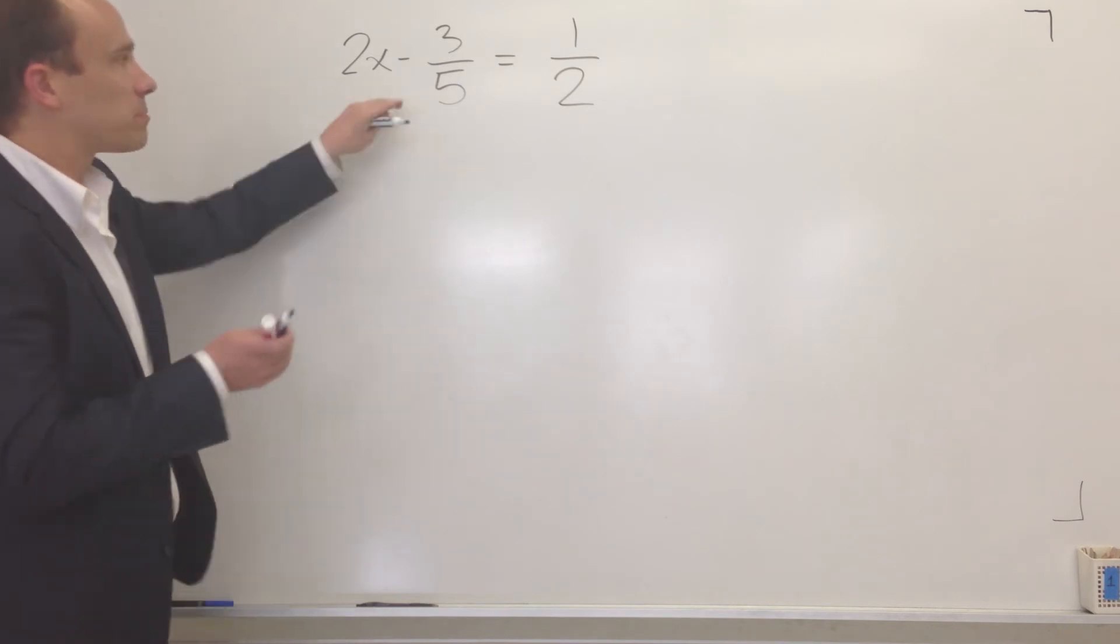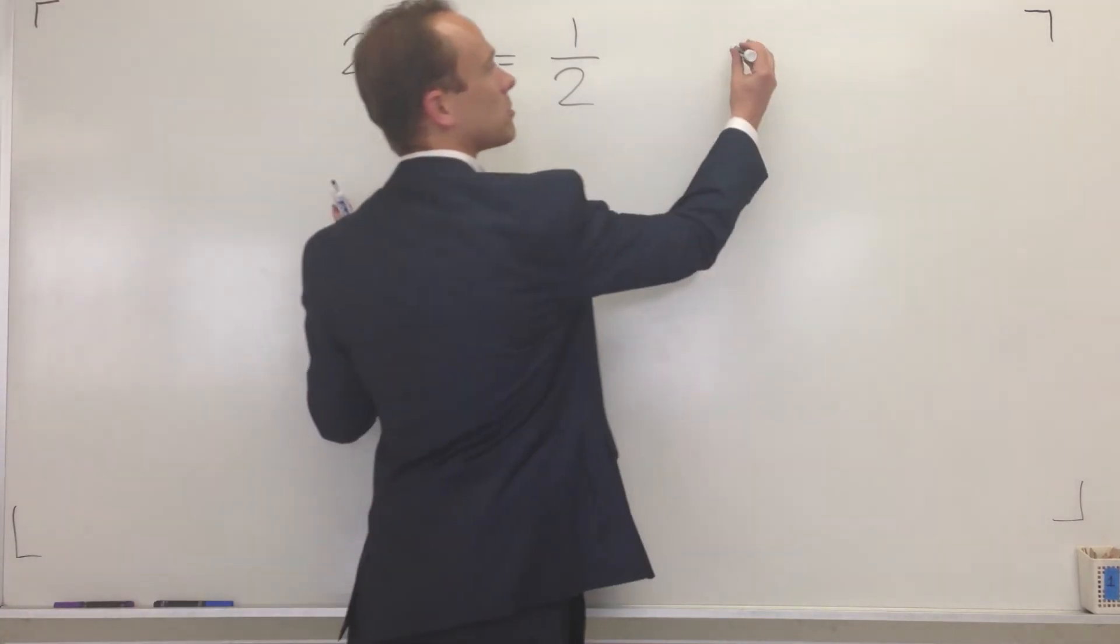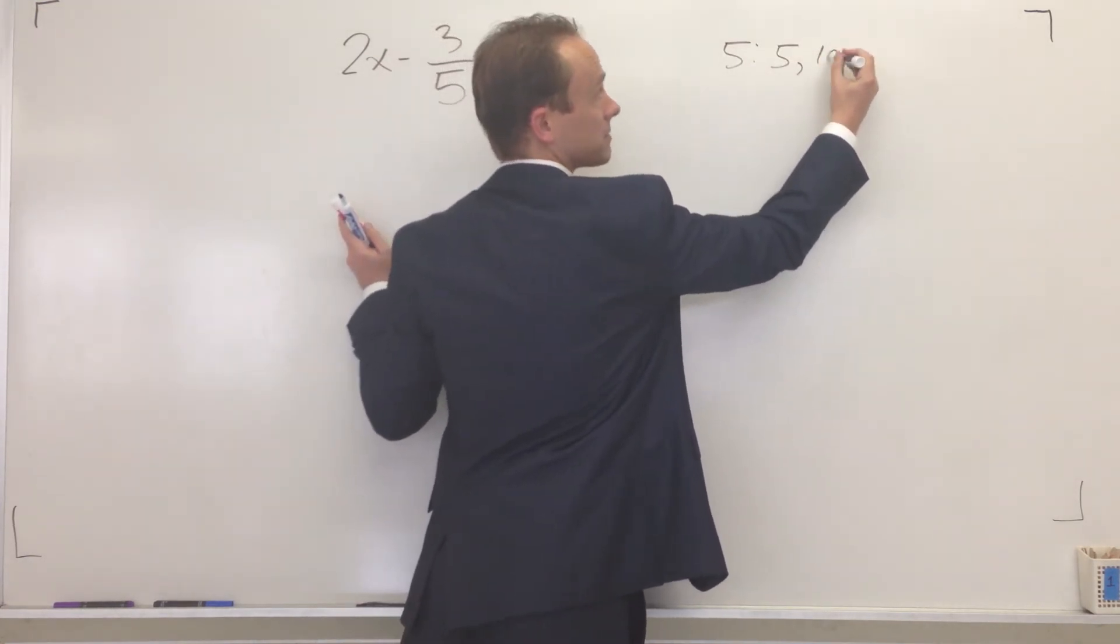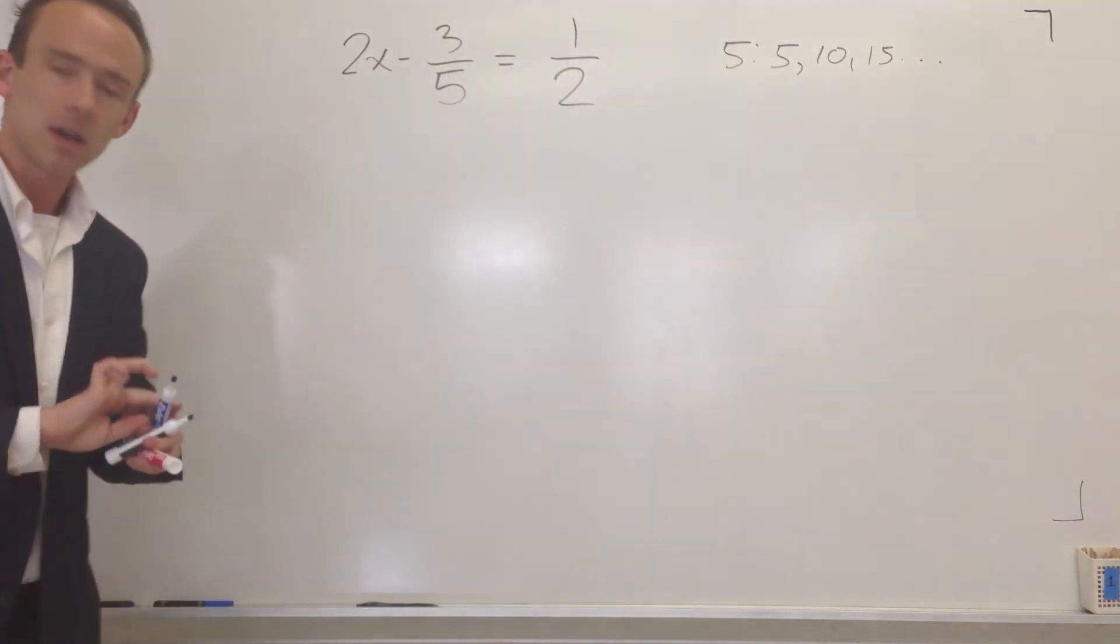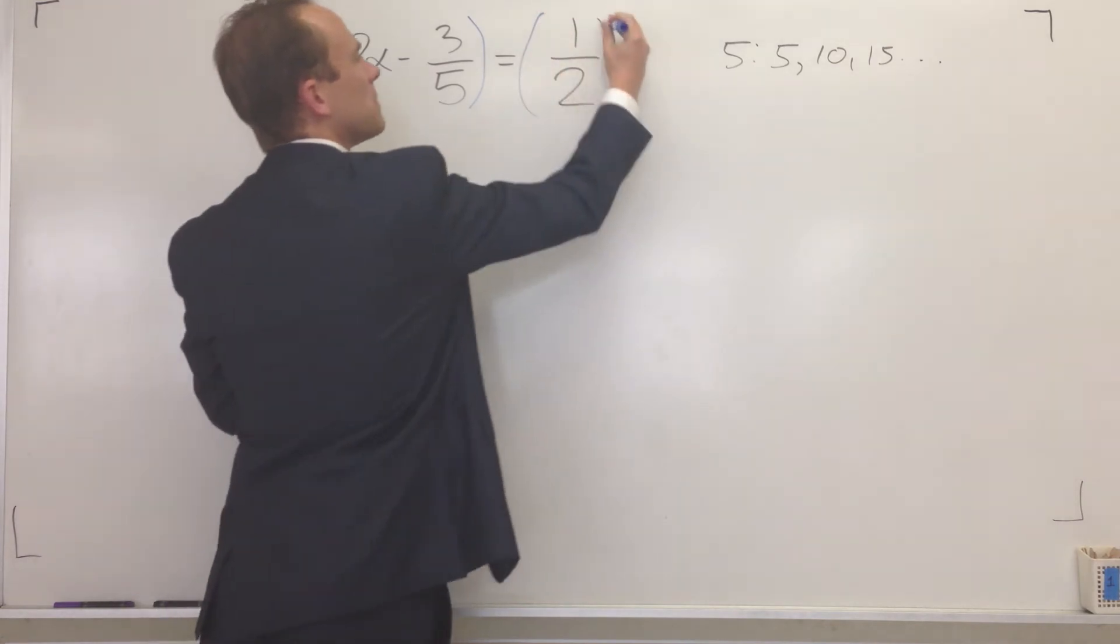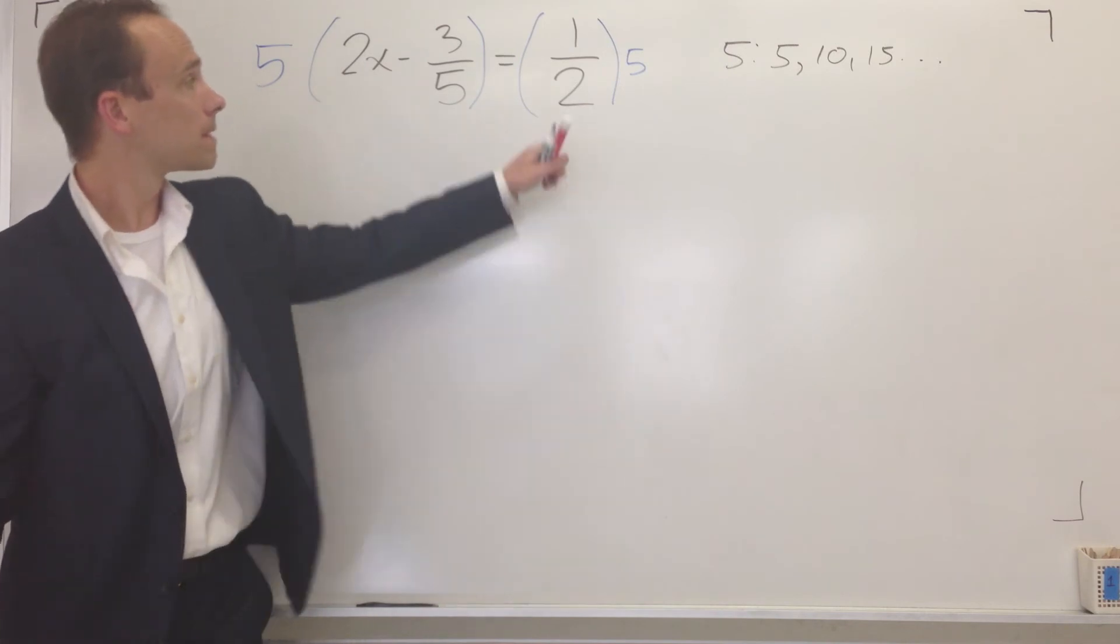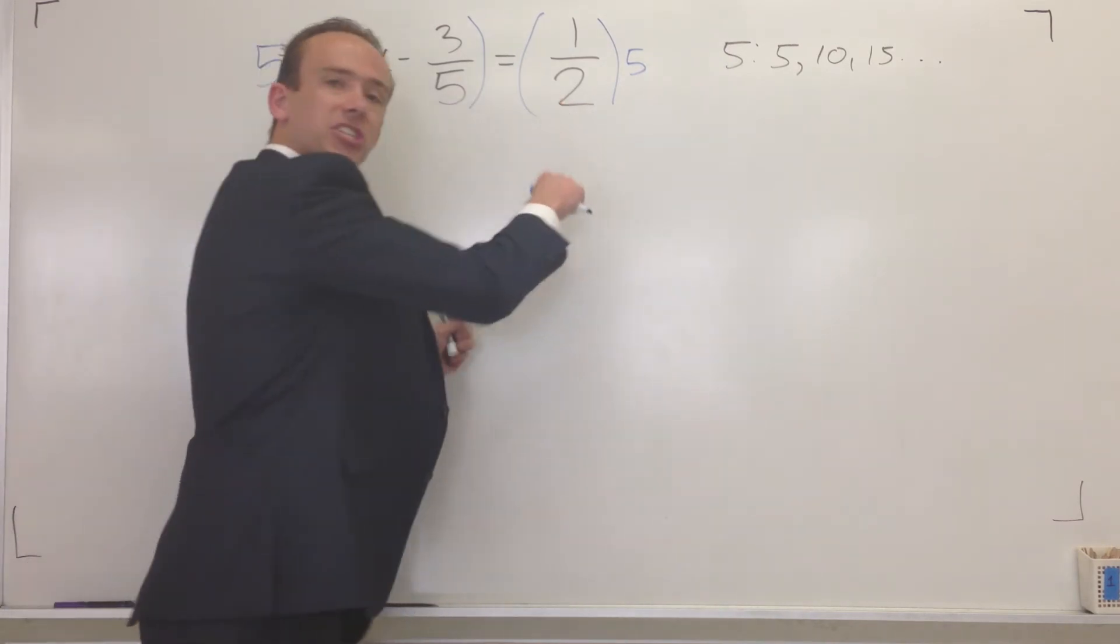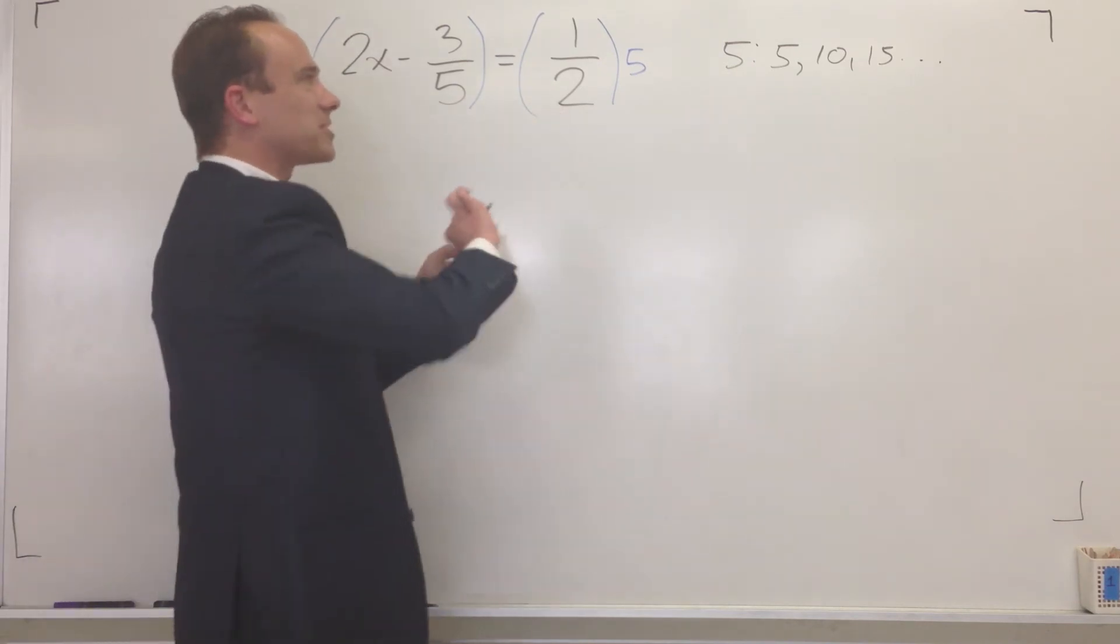Now here, what number would blow up five? We already talked about that. First one is, of course, five. Some of the other ones are listed there. But think to yourself, what's the problem if I multiply both sides by five? It doesn't blow up the two. This fraction would still be there.